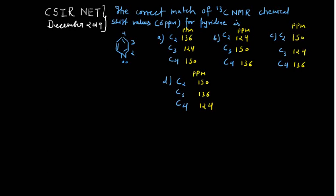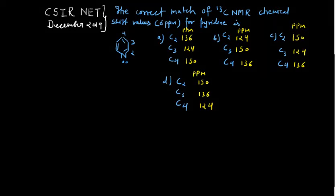One of the questions is actually not related to the combined spectrum problem — it is simply based on ¹³C NMR. The second problem, as you will see a little later, belongs to the combined spectral problem. The question asks for the correct match of the ¹³C chemical shift value in delta ppm for the pyridine molecule, and you have been given four sets: A, B, C, and D. It is a straightforward question, but you have to apply basic organic chemistry concepts to identify the correct values.